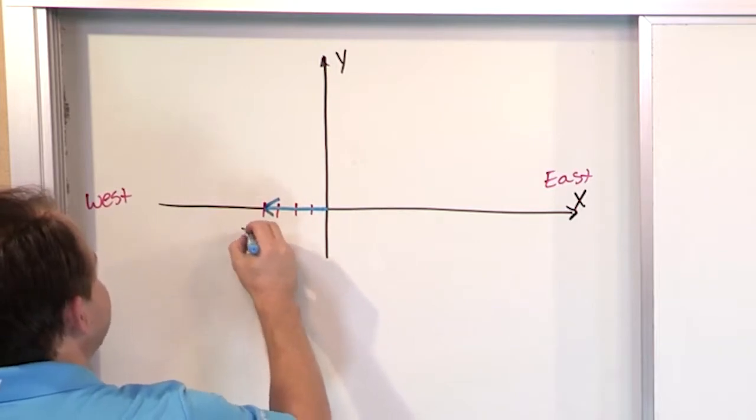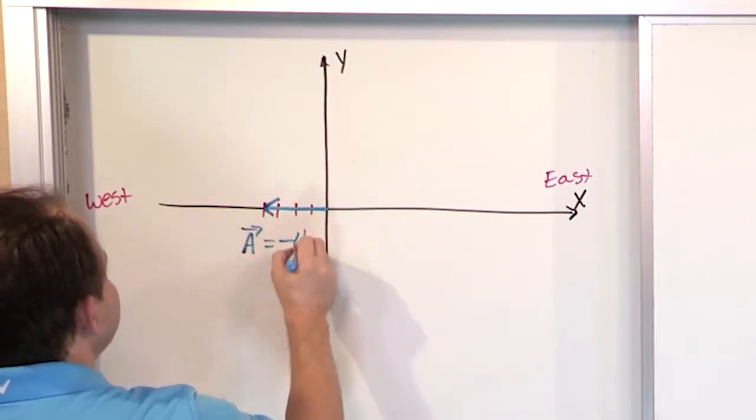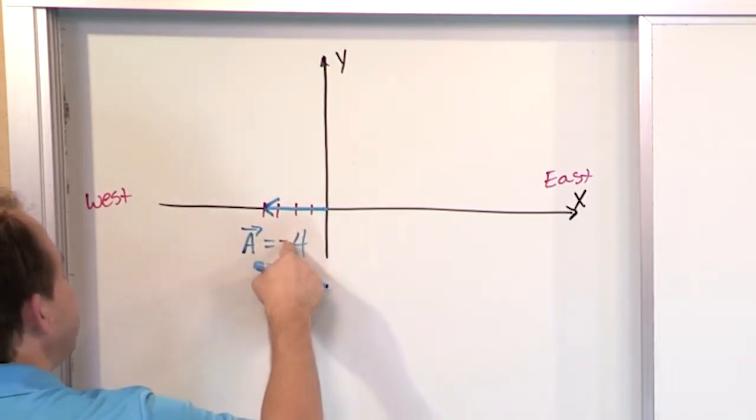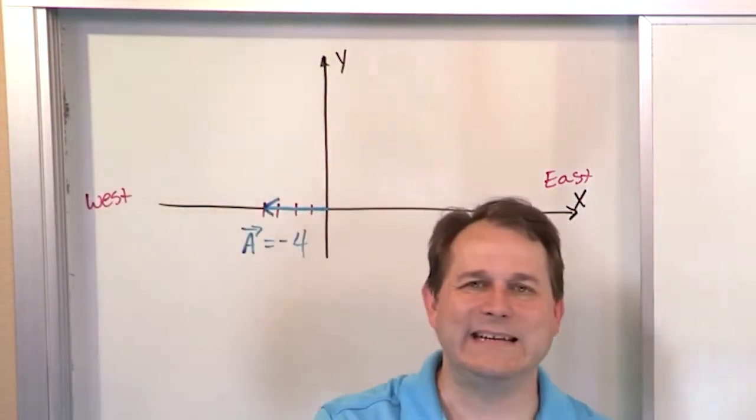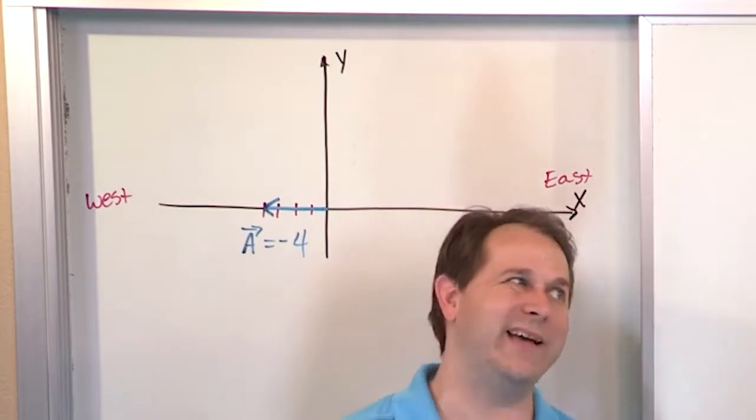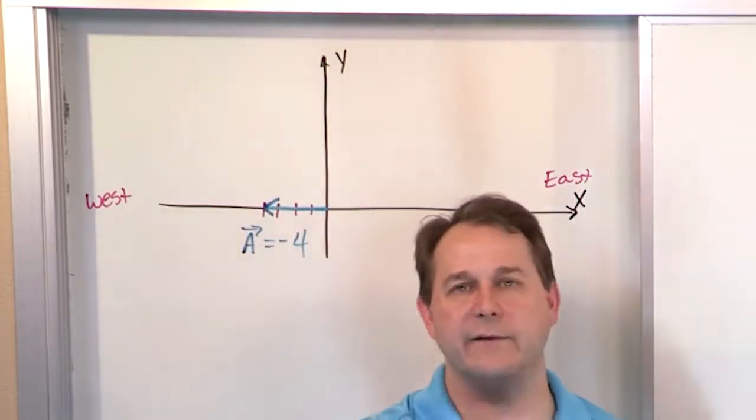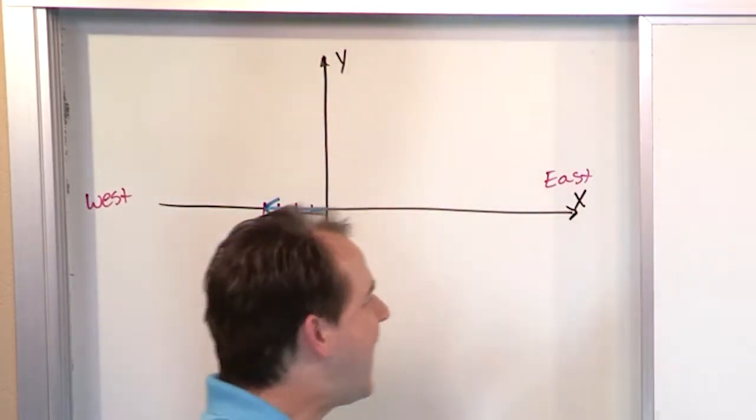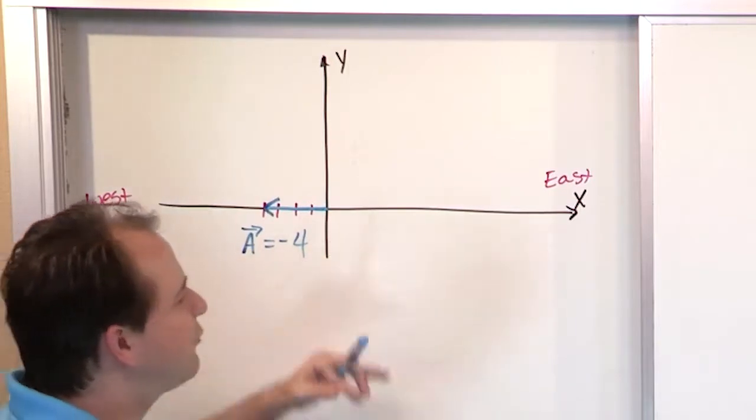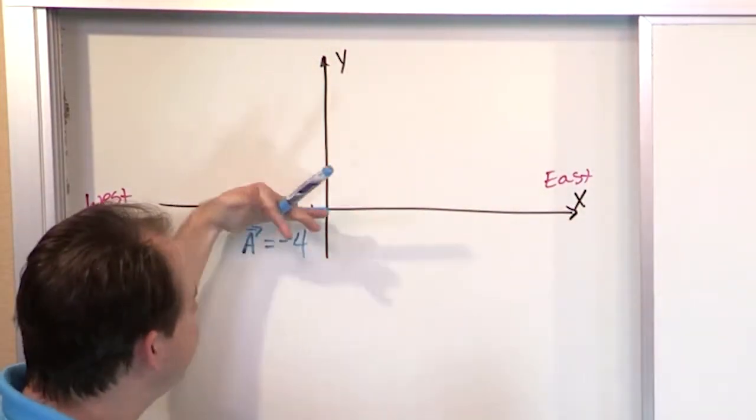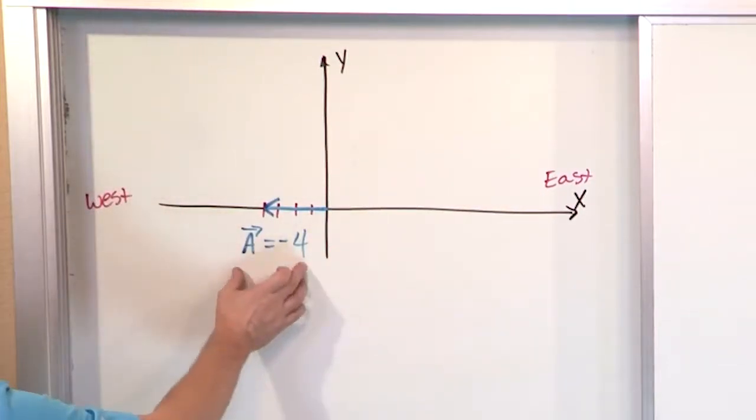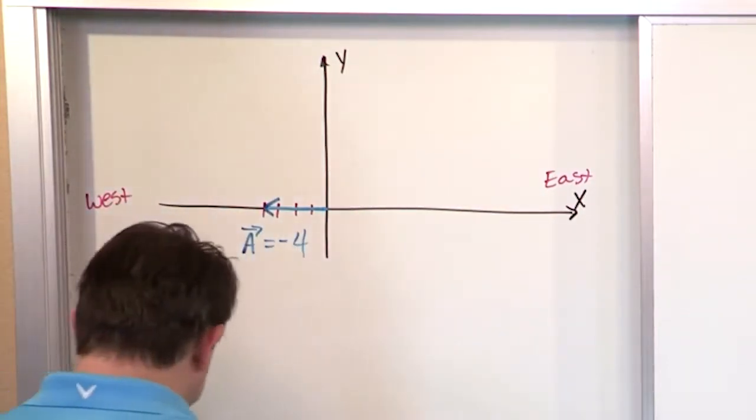So, we say something like, the vector a is negative four. Don't forget the negative sign. Why do you need negative? Because, you see, in the problems, they'll tell you west and east. And you have to know that west is to the left, east is to the right. So, that means negative numbers go that way. I have to put the negative sign there to keep track of which way the thing's actually flying. If I put positive four, that would mean we'd be flying the other way. So, negative means flying to the left. And that's vector a.